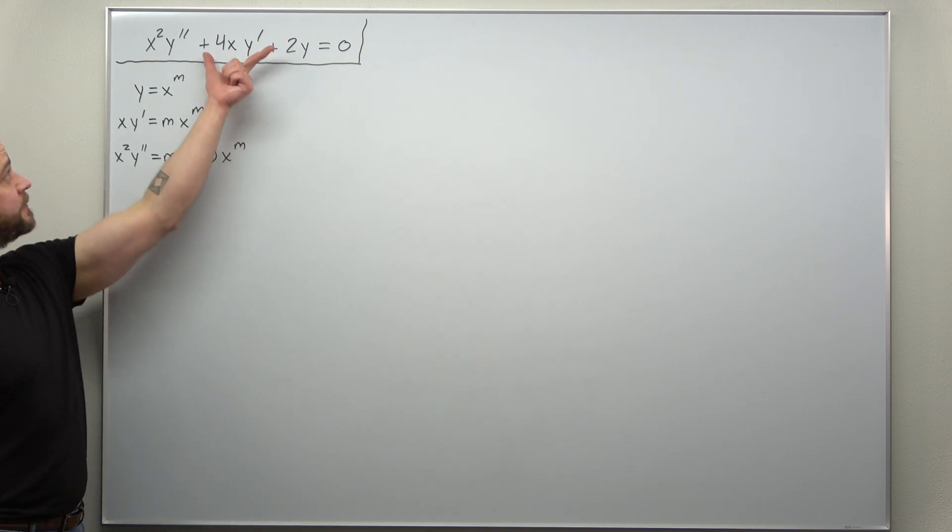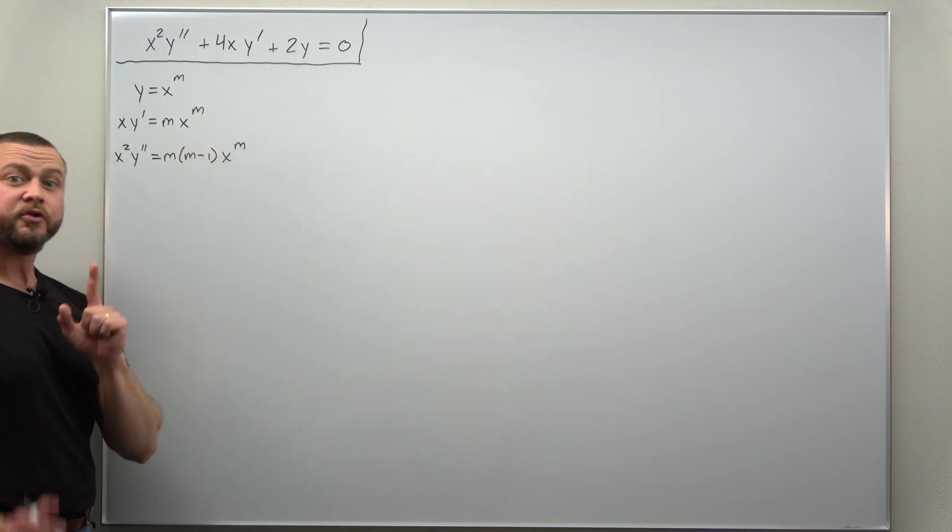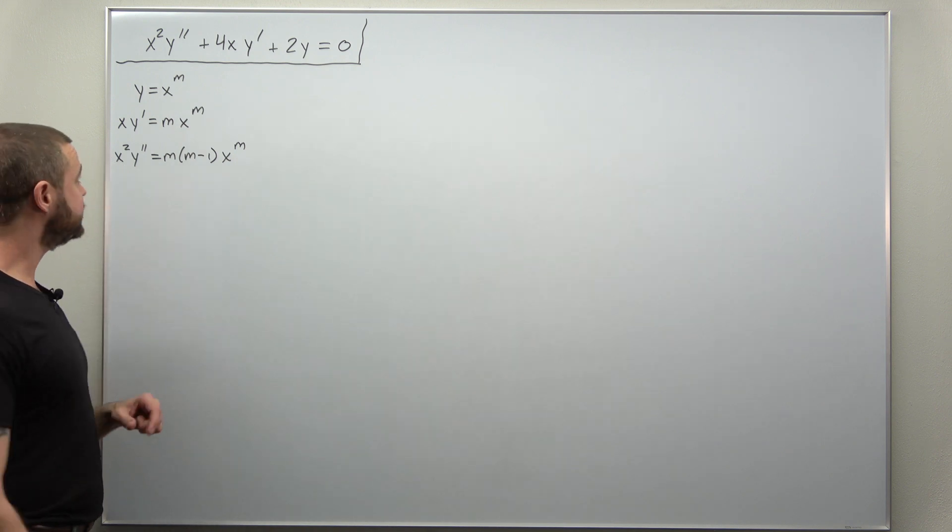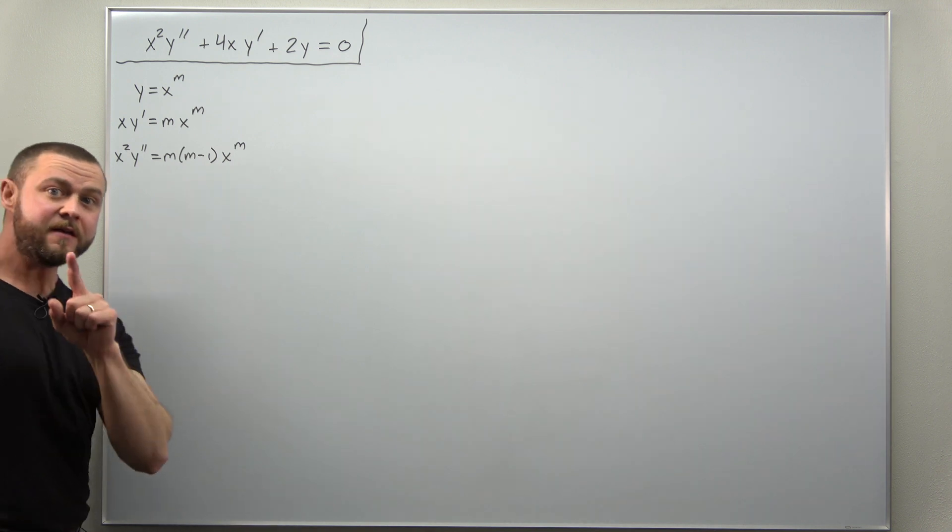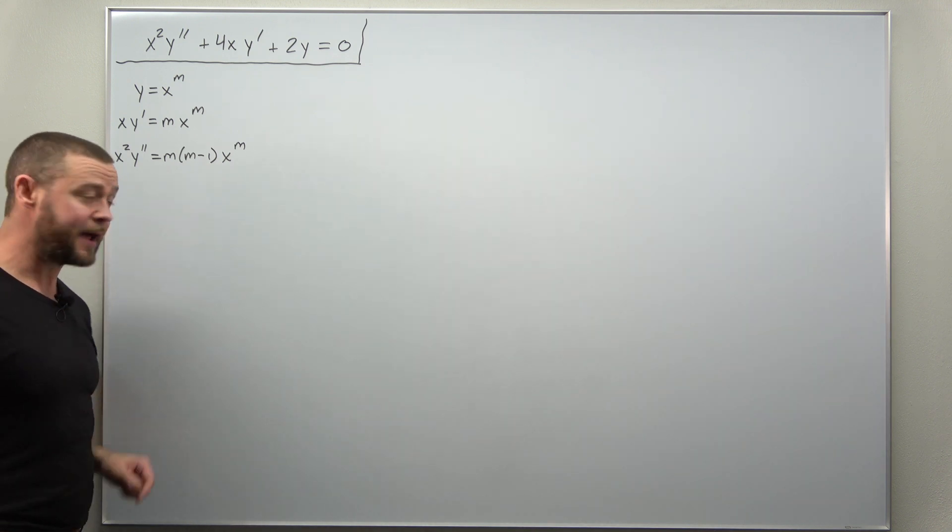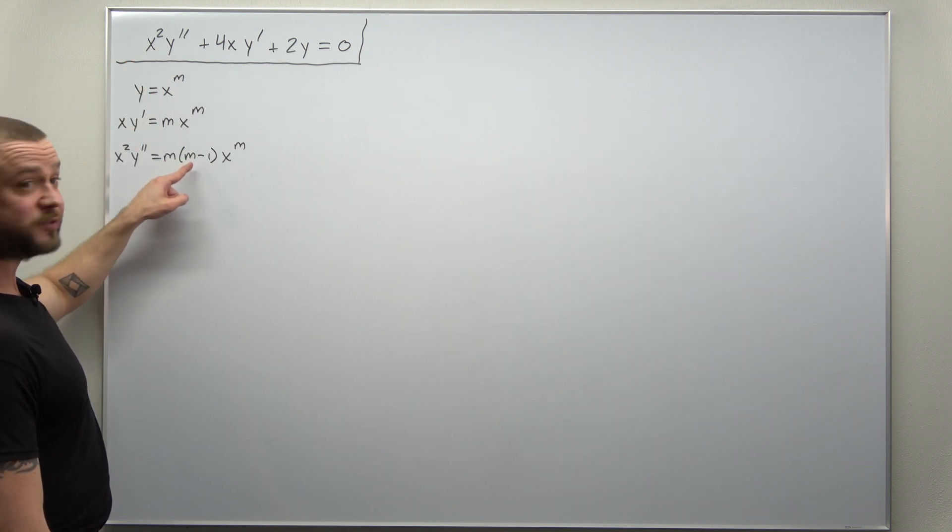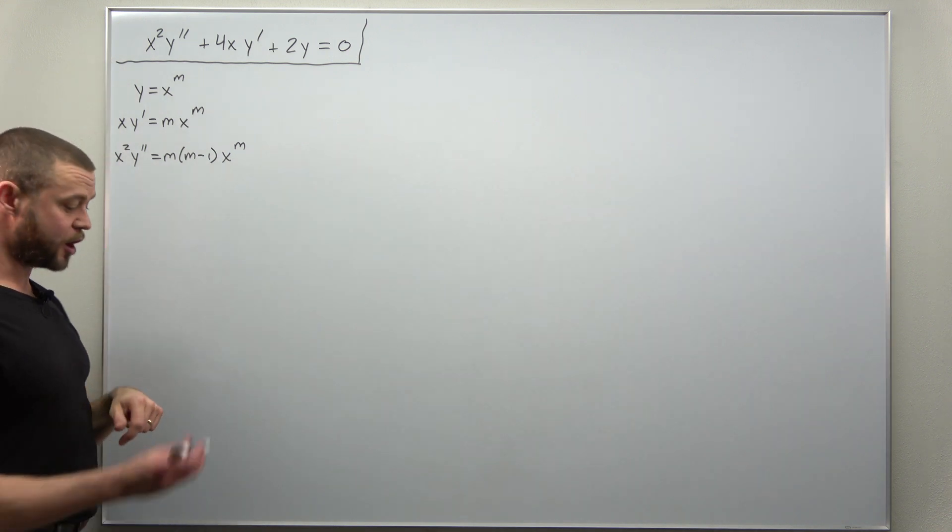It'll make it very quick to convert from the equation to the auxiliary equation. So let's go ahead and do that. We're going to already factor out x to the m from everything, so if we plug in, looks like our x squared y double prime term, we just get m times m minus 1, there's no extra coefficients.